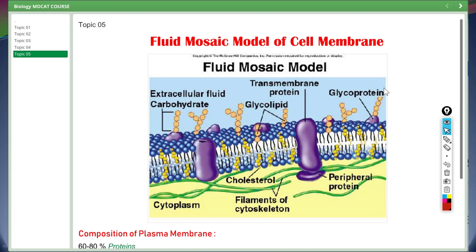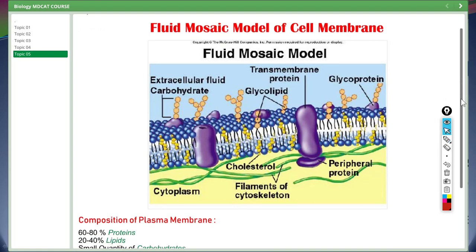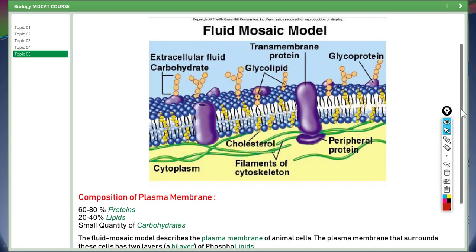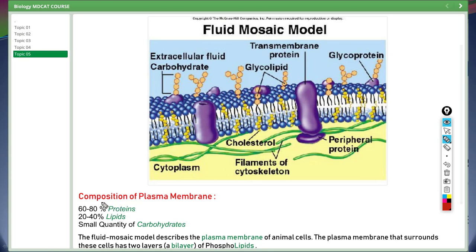Now move on to last part of this lecture. The topic is fluid mosaic model of cell membrane. And you can see this model here in this diagram. First look at the composition of plasma membrane. Plasma membrane contains 60-80% proteins, 20-40% lipids, and small quantity of carbohydrates. You can see in the diagram here we have peripheral protein, transmembrane protein, glycoprotein. So these all are proteins.